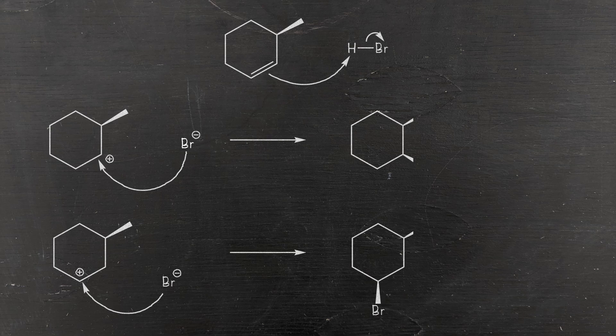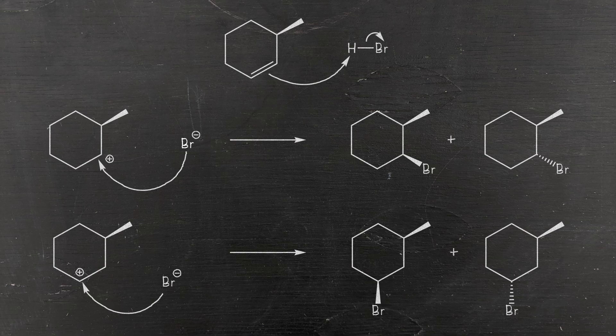Once those carbocations are formed, the negatively charged bromide can come in and complete the reaction. Now, carbocations are flat—they have a trigonal planar geometry—so it is equally likely that our bromine will come in from the underside or the top side of the ring, which is why we see both cis and trans isomers for our products.